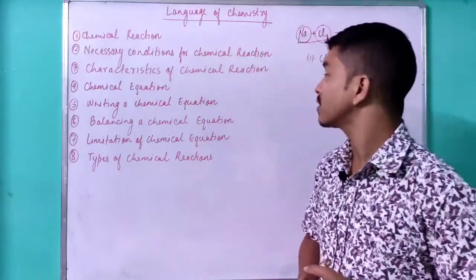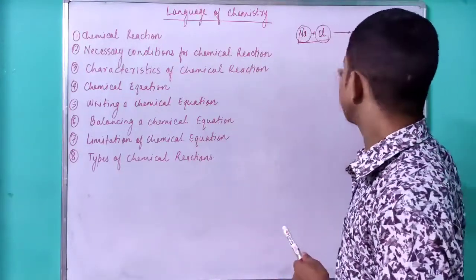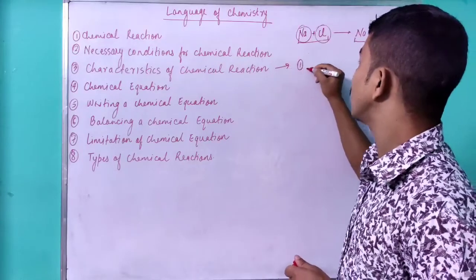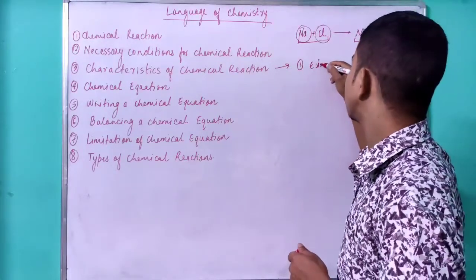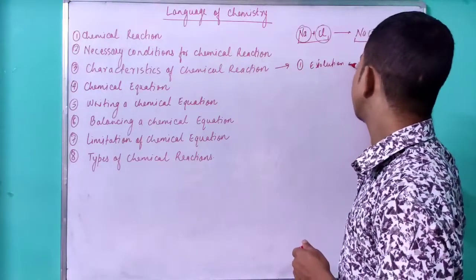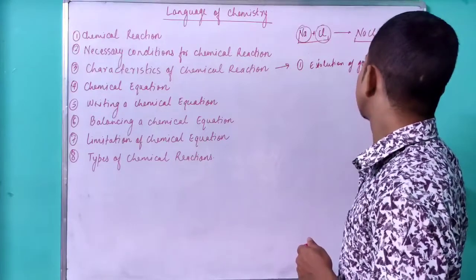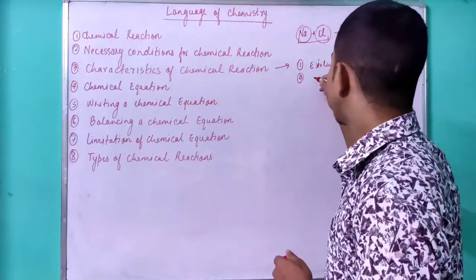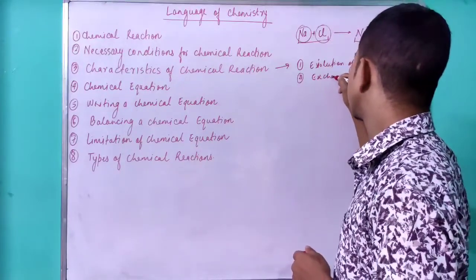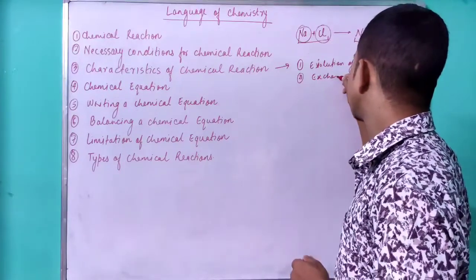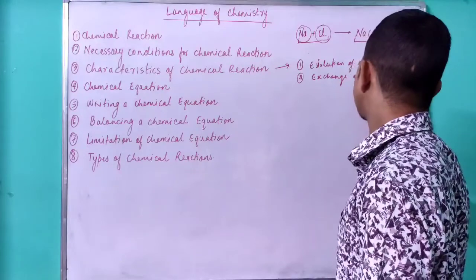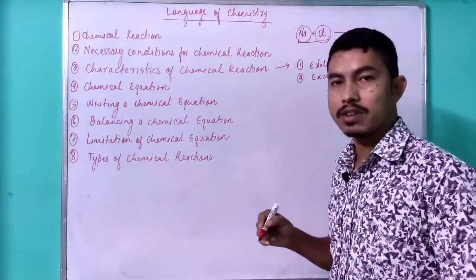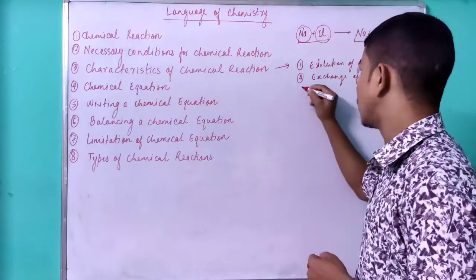Coming to the characteristics of the chemical reaction — whenever a chemical reaction occurs, it is always accompanied by the evolution of gas. The second characteristic is the exchange of heat — whenever a chemical reaction occurs, either heat is absorbed or heat is given out.